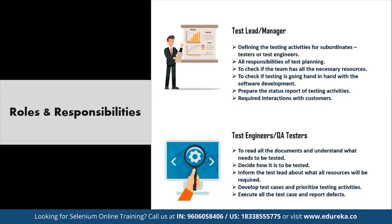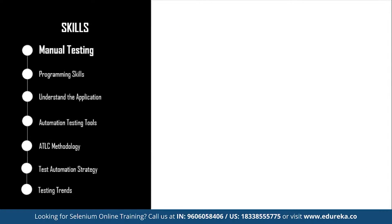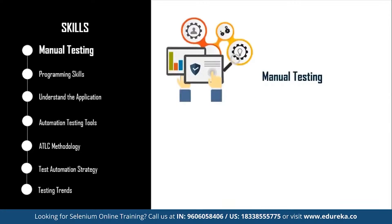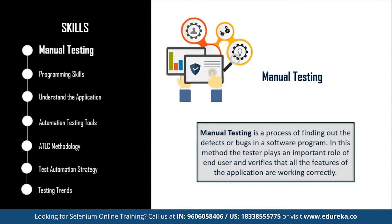Test automation engineers can save you from a world full of manual code work, and enterprises agree — which is why there are many job opportunities in the automation testing industry. Here are the seven most important steps to becoming a test automation engineer. The first is manual testing: while companies are moving towards codeless automated testing tools, it is highly important to focus on manual testing concepts initially. Manual testing is a process of finding defects or bugs in a software program where the tester plays the role of end user to verify all features work correctly.